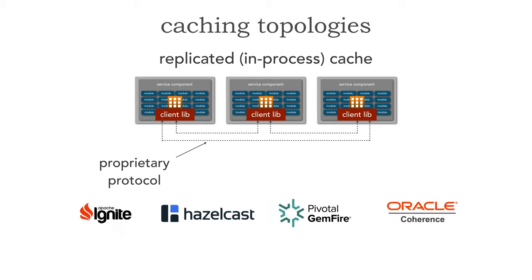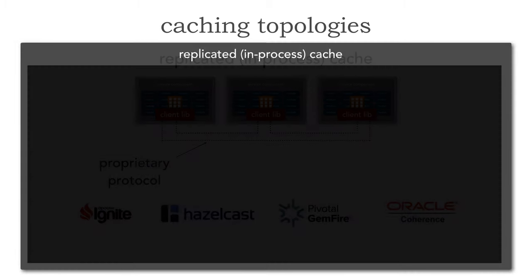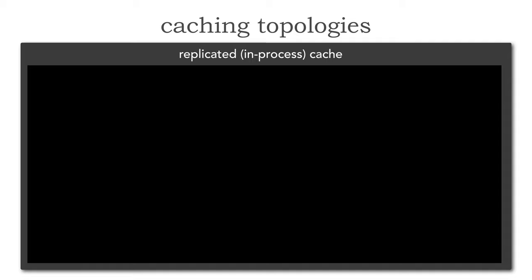If any updates are made to this cache on any of these three services, the other two will be instantaneously updated to reflect that update. The idea with a replicated cache is that while we're duplicating the data, we don't have to go to an external source like we did with the distributed cache. The top four caching technologies that support a true replicated or in-process cache are Apache Ignite, HazelCast, Pivotal Gemfire, and Oracle Coherence. Replicated caching is different than mirroring within a server because in this case you don't hold any additional data other than that cache — for example, names of customers.